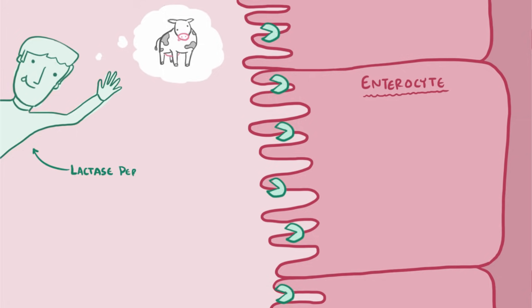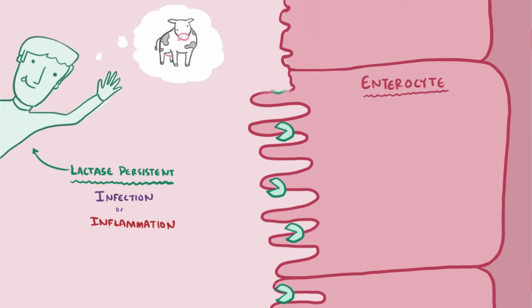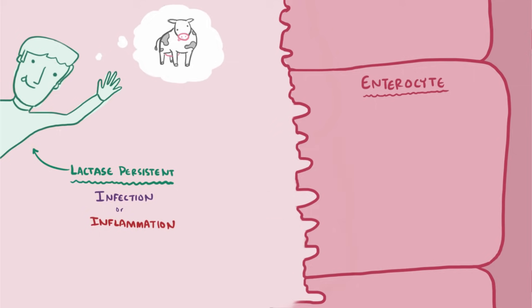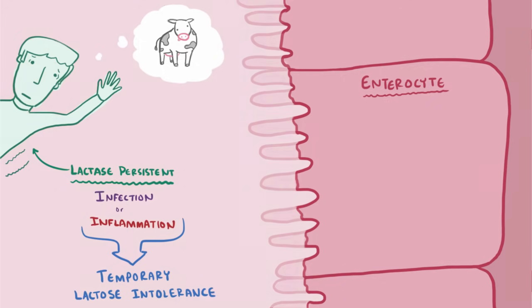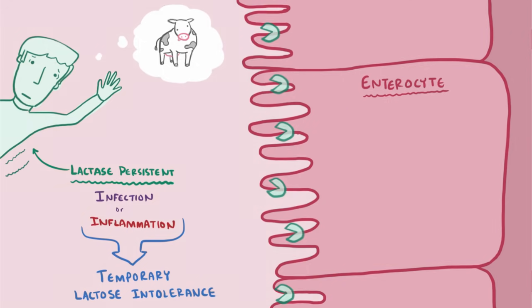Sometimes even those with lactase persistence can develop temporary lactose intolerance as a result of infection or inflammation of the small intestine. During these acute illnesses of the small intestine, the microvilli of enterocytes can be flattened or damaged, and since these are the dwellings of our lactase enzyme friend, these acute illness states can cause a lack of lactase enzyme, and result in temporary lactose intolerance. Once the small bowel heals, though, they'll be able to produce lactase again.